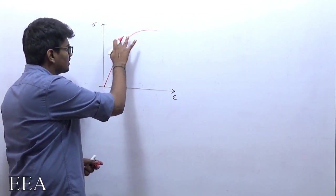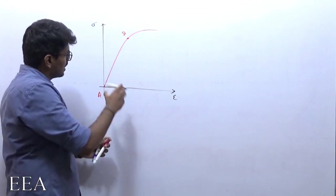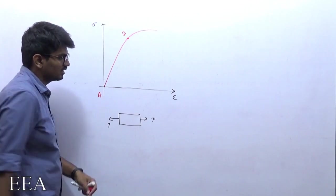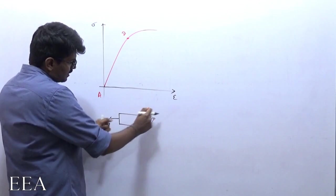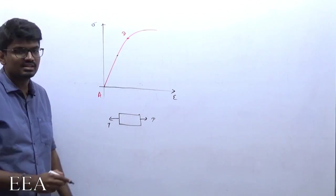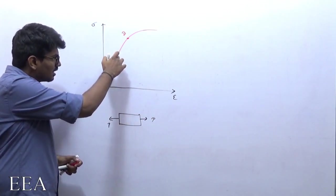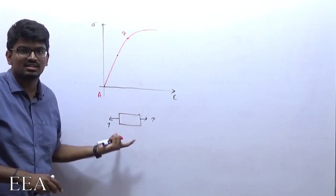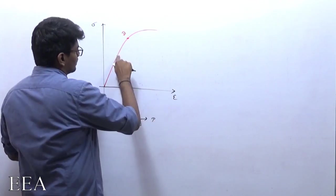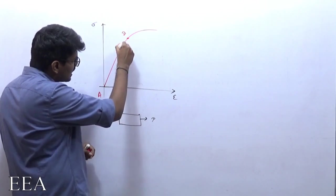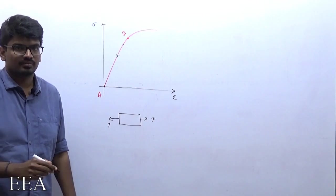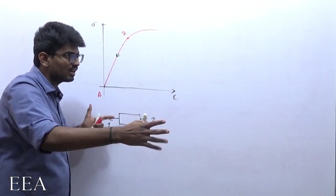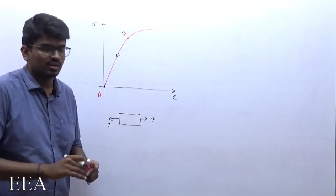From point A, let this be point B. If I load any member and apply load continuously, the member gets strained. If the member is strained until point B and I remove that load, it will regain its original shape — it will come back to its original position — because it is within the elastic limit. Loading until point B and removing the load, it will follow the same curve back to the origin.